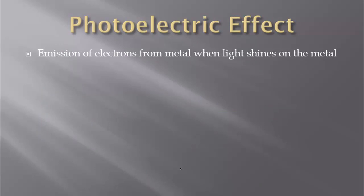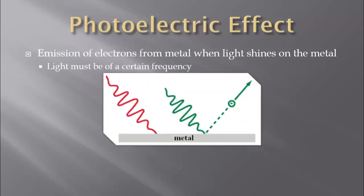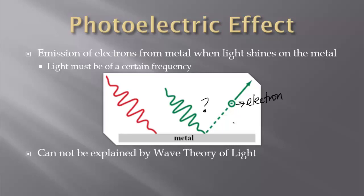So how did we use waves to help us find out about the electron? We studied something called the photoelectric effect — the emission of electrons from a metal when light shines on the metal. We found that light must be of a certain frequency to actually react with a metal. Red light hits the metal and nothing happens, but green light hits the metal and it shoots off an electron. This raised some eyebrows — how does light move an electron? Because light does move an electron, it really cannot be explained by the wave theory, so the photoelectric effect left a big question.